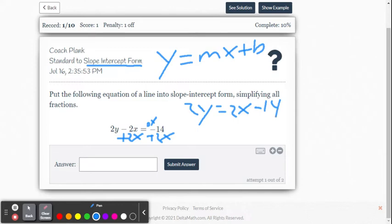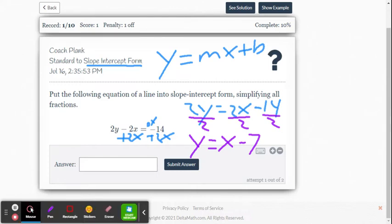All right, we're almost there. Not quite though. So we need it to be 1y, not 2y. So we are going to divide both sides of the equation by 2. And remember, you divide every term by 2. So we're going to get y equals 1x minus 7. So that is slope-intercept form. Let's put it into our equation here for Delta Math. y equals x minus 7.